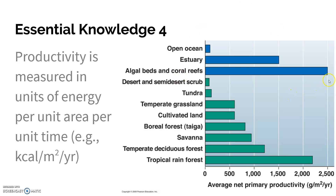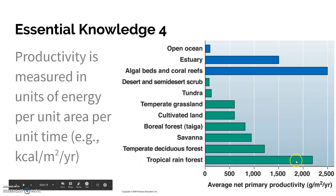It's not surprising that the areas where we have a lot of productivity — like algae beds, coral reefs, and tropical rainforests — have a lot of vegetation, a lot of trees and shrubs. So you have a lot of primary productivity, a lot of tissue being generated.